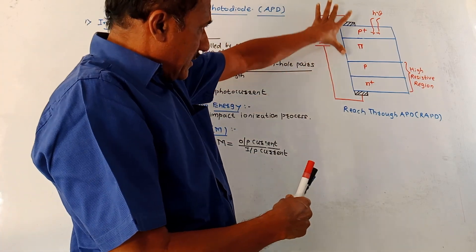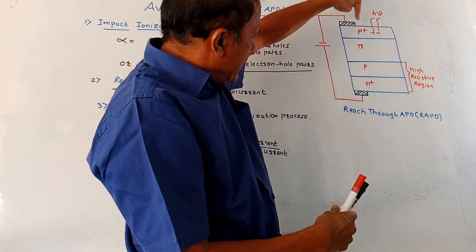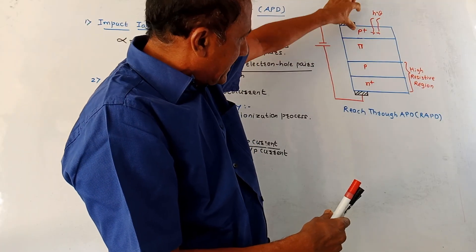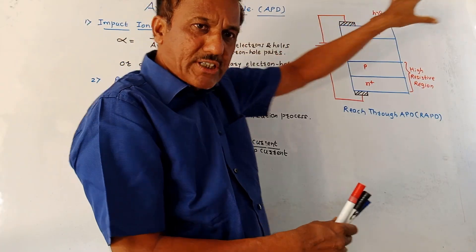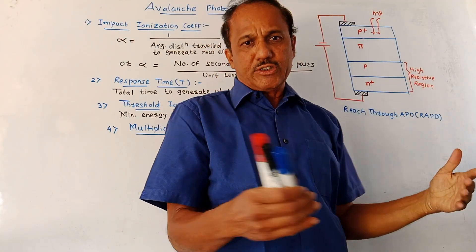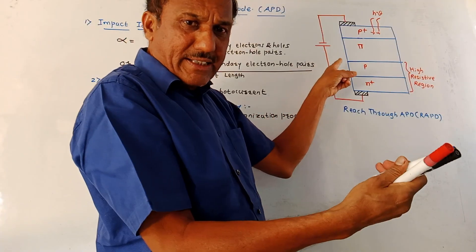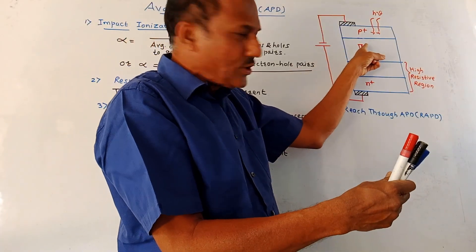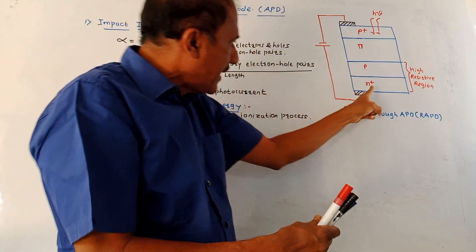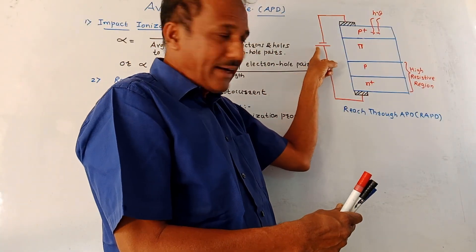Now this is the construction details of APD. This is the P plus region and this one is the N plus region. These P plus and N plus regions are heavily doped. Like earlier diodes, APD is also connected in reverse bias. That means reverse bias is applied to the structure, so P plus is connected to the negative terminal of the battery and N plus is connected to the positive terminal of the battery.